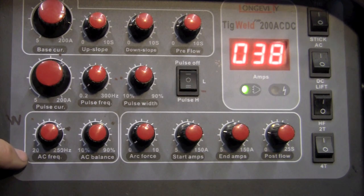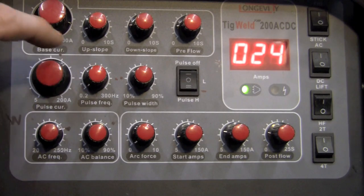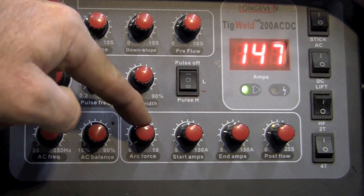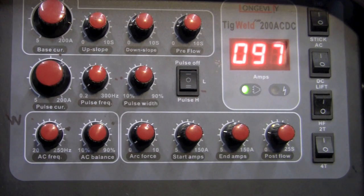Now my AC frequency I have set to about 200 hertz. AC balance I'm about 45. Arc force does not come into play, that's for our stick welding. Start amps I'm about at 10 amps. My end amps I'm about at 10 and my post flow I'm right at 3.